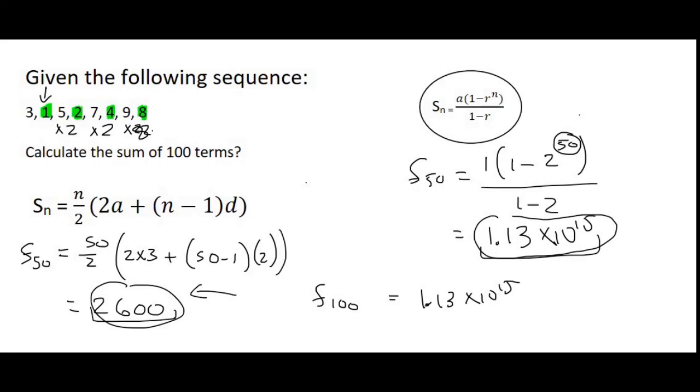It's only in this example where the one pattern had a sum that was extremely big. And so the other pattern didn't really make a difference to the sum of the hundred numbers.